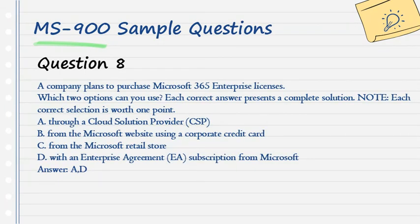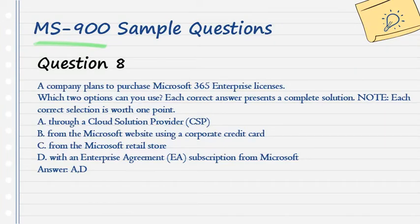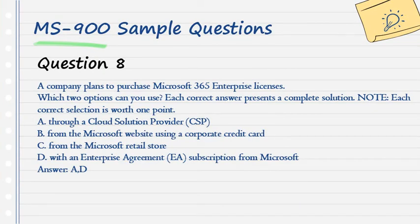Question 8. A company plans to purchase Microsoft 365 enterprise licenses. Which two options can you use? Each correct answer presents a complete solution. Note, each correct selection is worth one point. A. Through a cloud solution provider. B. From the Microsoft website using a corporate credit card. C. From the Microsoft retail store. D. With an enterprise agreement. E. Annual subscription from Microsoft. Answer: A, D.